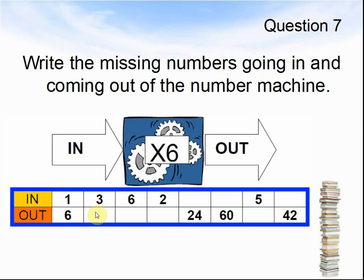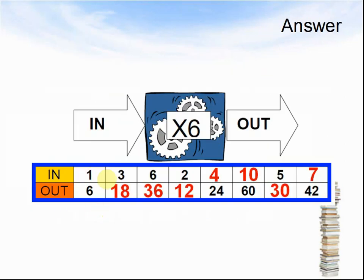Here comes the answers. The answers were: 1 times 6 is 6. 3 times 6 is 18. 6 times 6 is 36. 2 times 6 is 24. And here we have to do some dividing. 24 divided by 6 is 4. 60 divided by 6 is 10. Then multiplying. 5 times 6 is 30. 42 divided by 6 is 7.